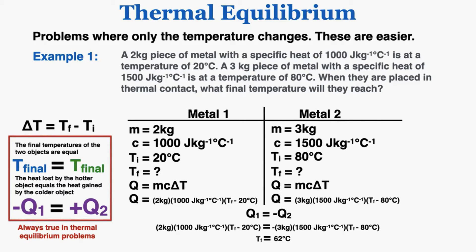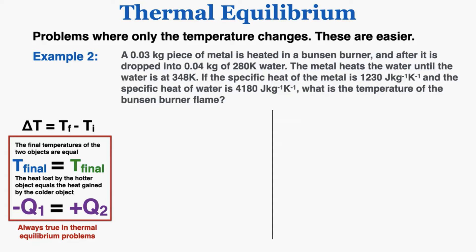When I do that algebra, I find that the final temperature is equal to 62 degrees Celsius. I can now use what I know about thermal equilibrium to calculate the exact final temperature of any two objects of different mass, different specific heats, and different temperatures that are placed in contact with each other.